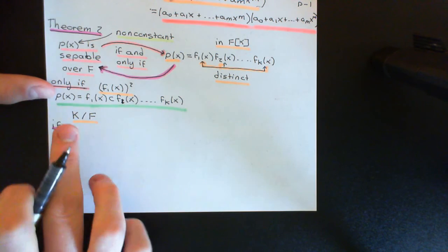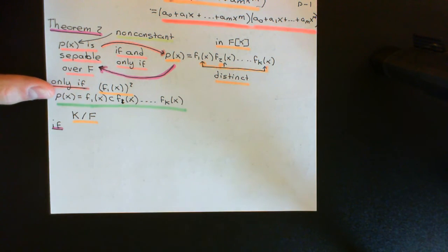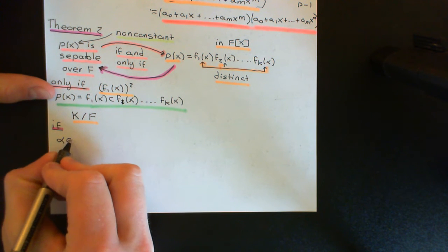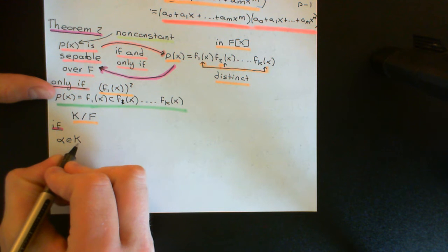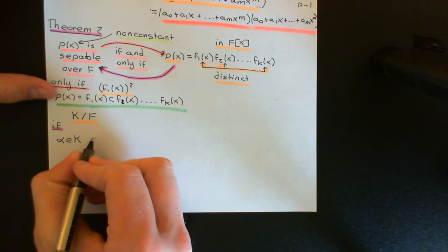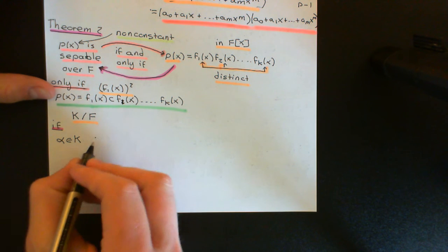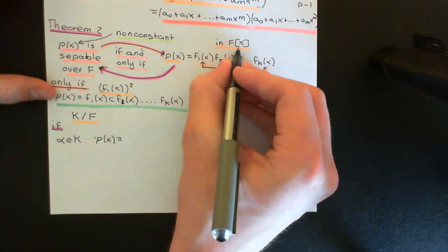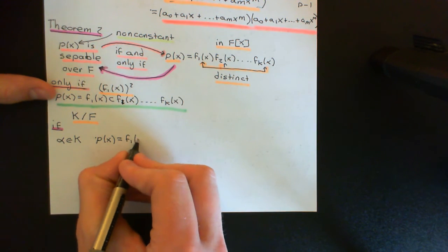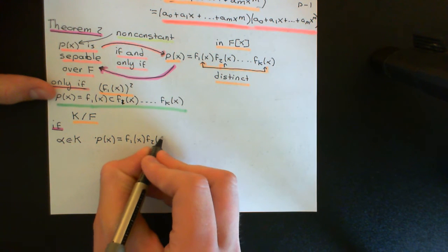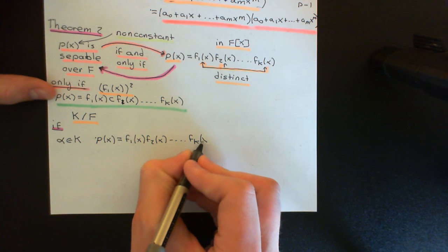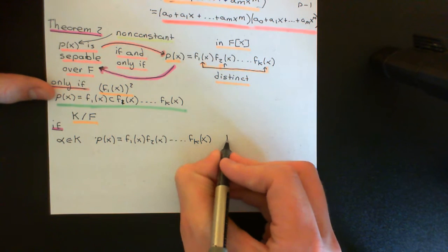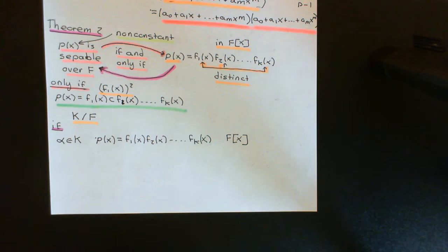If P(X) is not separable, then in the splitting field for P(X) over F, there must exist some root alpha that is a multiple root — not a simple root. In the splitting field K, X minus alpha must appear more than once when P(X) splits into linear factors. In the ring of polynomials over F, P(X) has the factorisation F₁(X) · F₂(X) · … · Fₖ(X) with all distinct irreducibles.